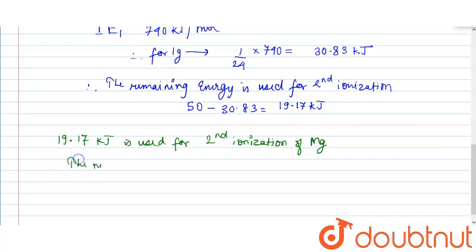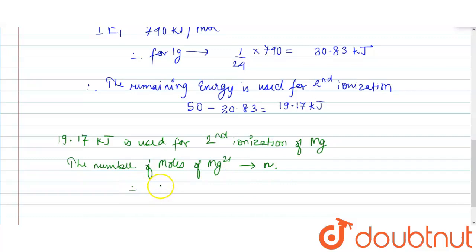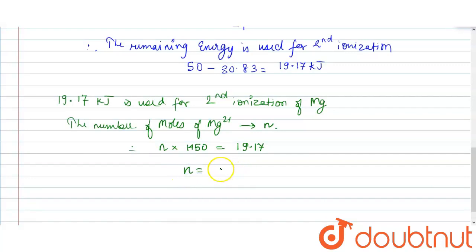Therefore, if we take the number of moles of Mg²⁺ as n, then n × 1450 = 19.17 (the energy left for the second ionization). We can get n = 19.17 ÷ 1450, which comes out to be 0.013 moles. Therefore, number of moles of Mg²⁺ = 0.013 moles.